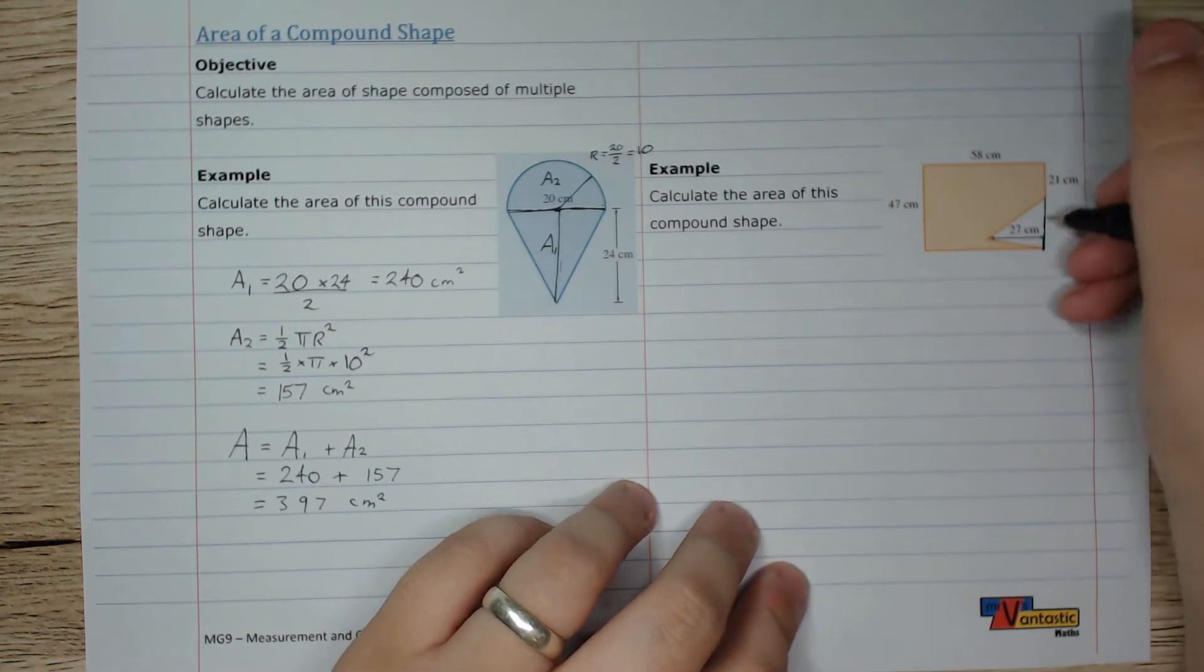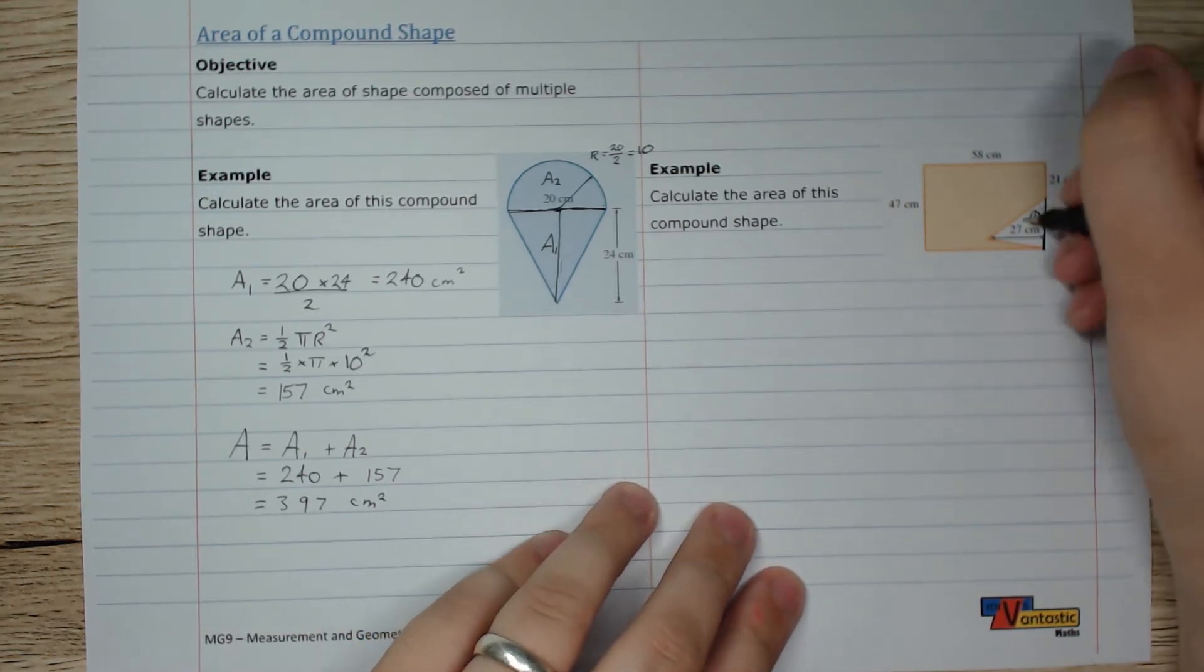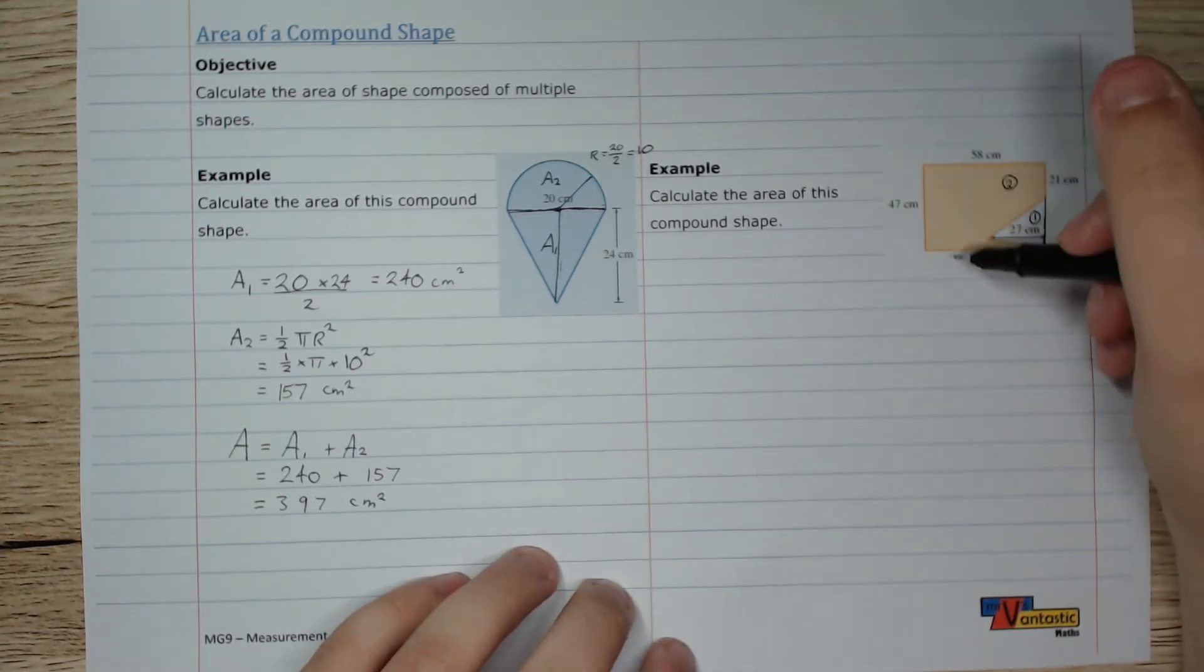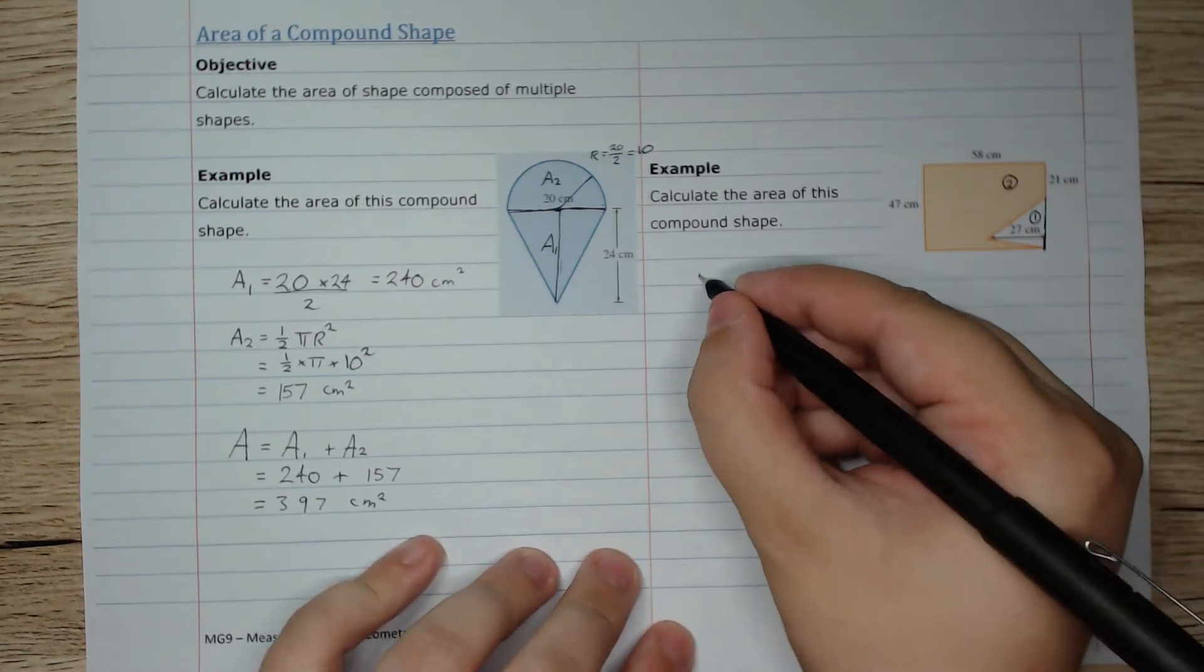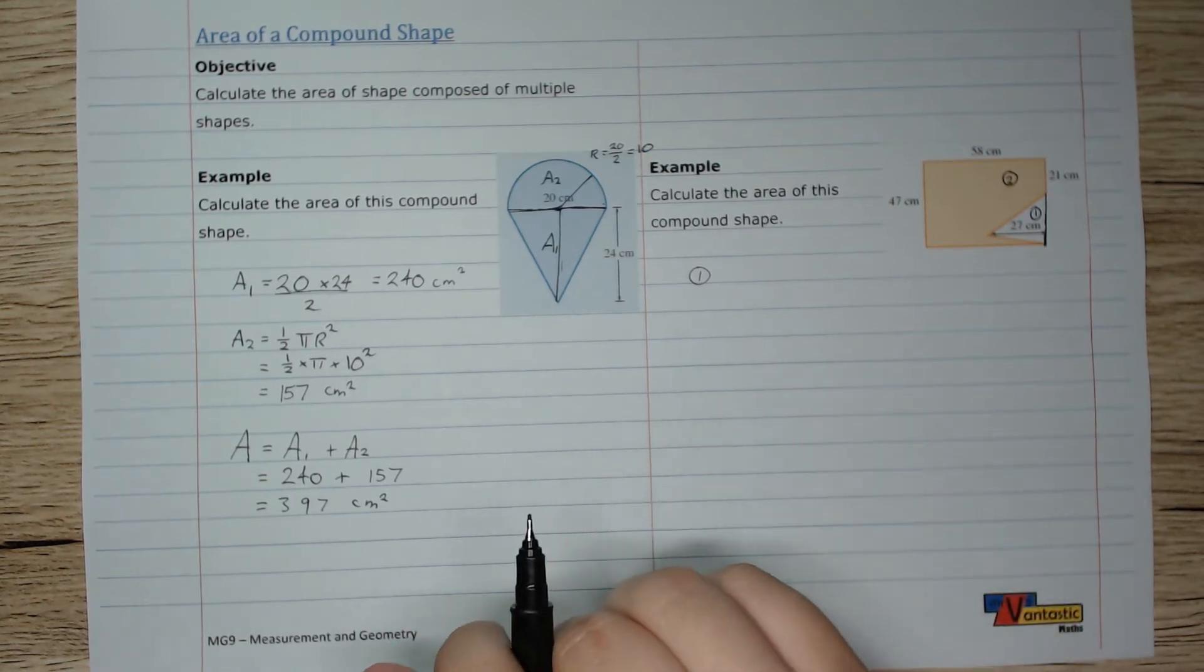So the way we're going to deal with that is we're going to calculate the area of the hole, when we calculate the area of the rectangle, the main shape, and we're going to subtract it. So I will start with the triangle in this case.